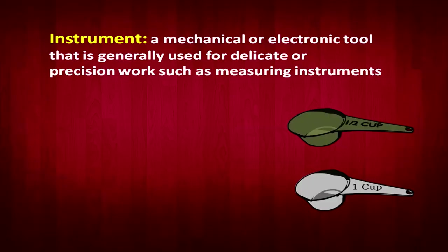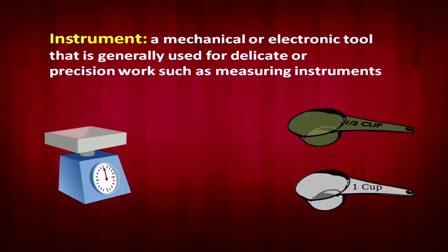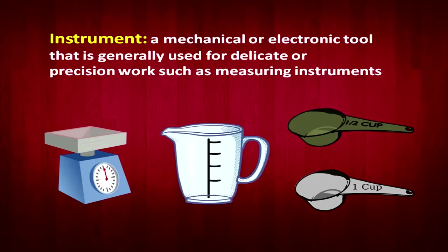An instrument is a mechanical or electronic tool generally used for delicate or precision work, such as a measuring instrument. Here we can see pictures of a balance, a measuring cylinder, and measuring cups — one measuring one cup, another measuring half a cup. These are instruments. We also use the word 'musical instrument,' not 'appliance,' because instruments are precisely for one purpose, where measurement and precision are required.